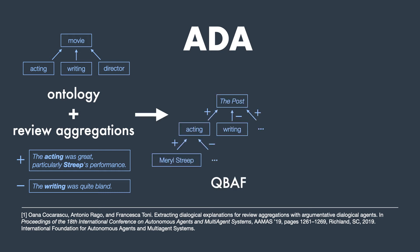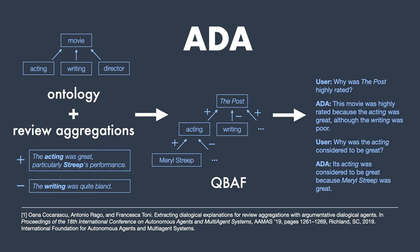Ada uses the ontology and the review aggregations to construct the Quantitative Bipolar Argumentation Framework, or QBAF, which consists of attack and support relations between the product's features. Here we see the QBAF constructed for the movie The Post. The review text mainly praised the acting, which means it is a supporting sub-feature of the movie, while the writing was thought to be poor, so it is an attacking feature. Using the QBAF, Ada can provide the user with conversational information about the movie's various aspects. Ada defines an argumentation dialogue, which consists of question and response templates, where the various features are inserted based on the QBAF.